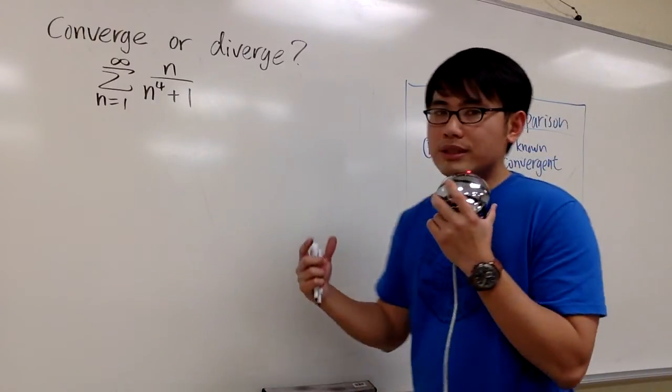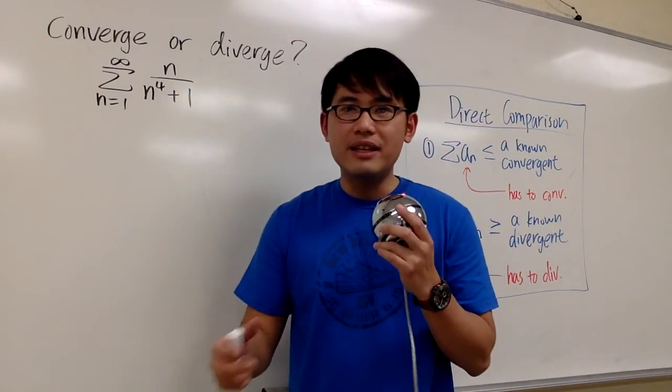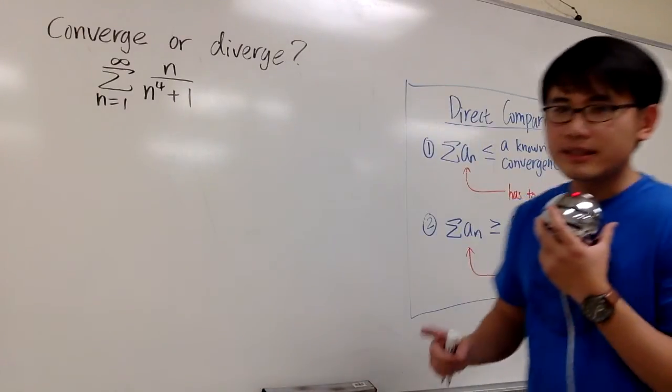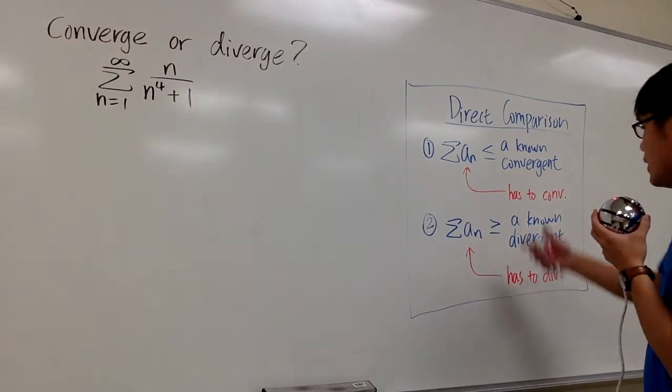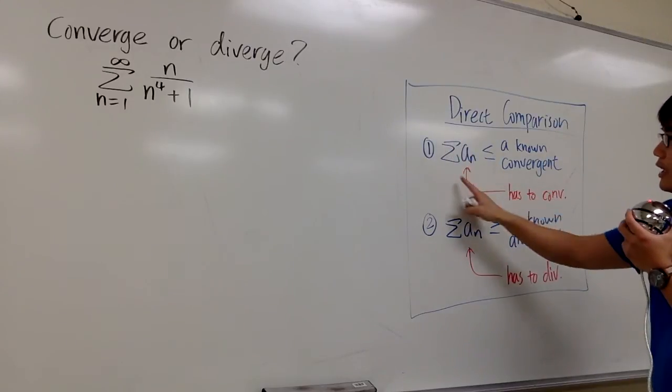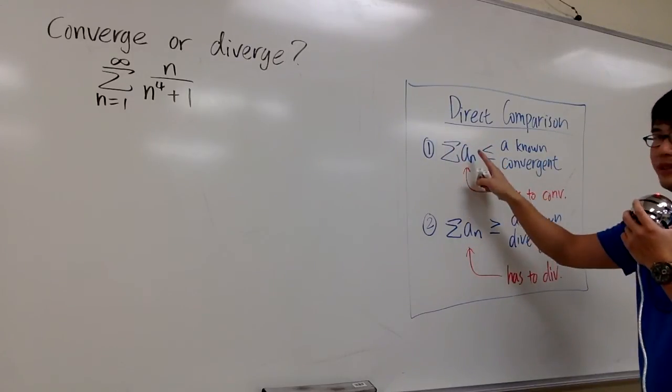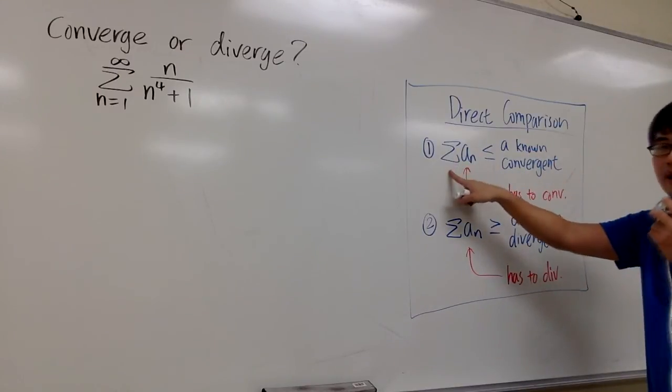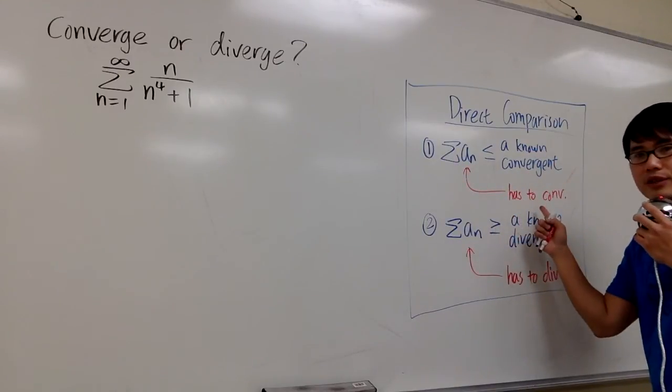To use the comparison test, either the direct comparison test or limit comparison test, we have to come up with something that we know much better. We have two situations when we are trying to use the direct comparison test. If the infinite series is less than or equal to a known convergent, then we know that the series has to converge as well.